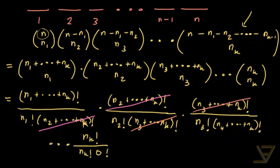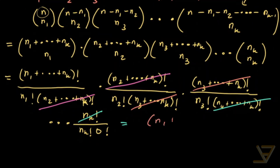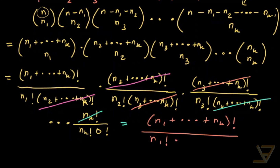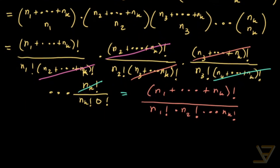All intermediate factorial terms cancel out except for the very last term. What we're left with in the end is (n1 + ... + nk)! divided by n1! times n2! all the way through to nk!. And that's our final formula.